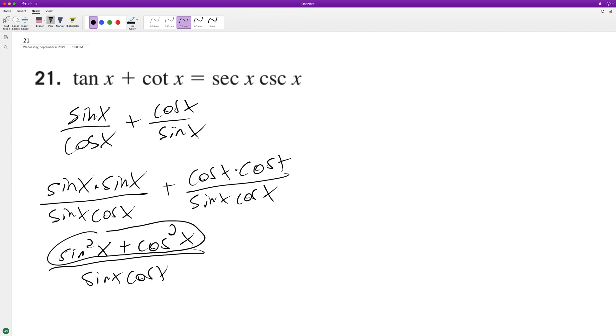And this right here is a trig identity. It's equal to one. So we end up with one over sine of X cosine of X. And we can break this down to one over sine of X times one over cosine of X. And why is that useful?